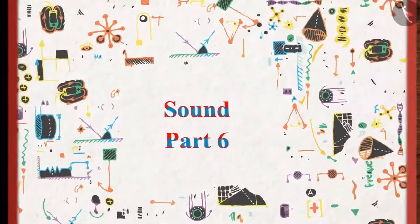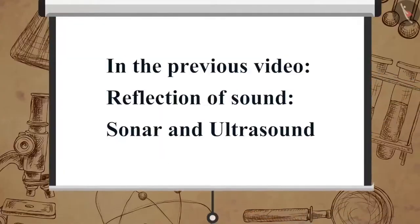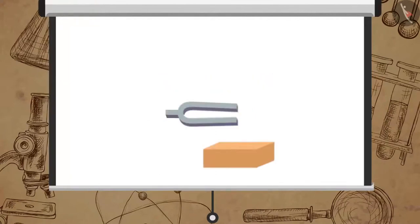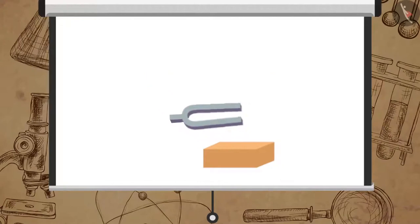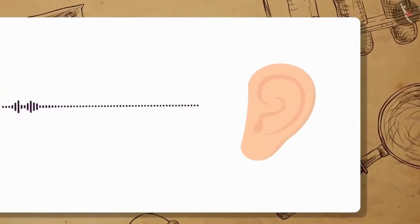Part 6: The Human Ear. In the previous video we learned about sonar and ultrasound. In this video we will learn about the human ear. Earlier we studied how sound is produced. Now let us learn how we hear the sound.